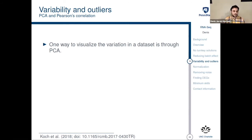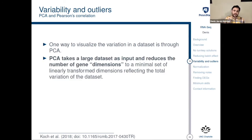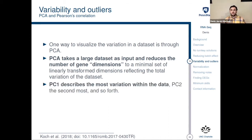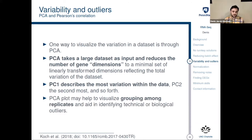How do we actually do that? One way to visualize the variation of the dataset is through PCA — principal component analysis — and this is one of the things I advise you to learn if you don't know it yet. PCA takes a large dataset as input and reduces the number of gene dimensions to a minimal set of linearly transformed dimensions reflecting the total variation of the dataset. You get a series of principal components: PC1 describes the most variation of the data, PC2 the second most, and so forth. Normally you look at PC1 and PC2. The PCA plot may also help to visualize groupings among different replicates and aid in identifying technical and biological outliers. Learn PCA.